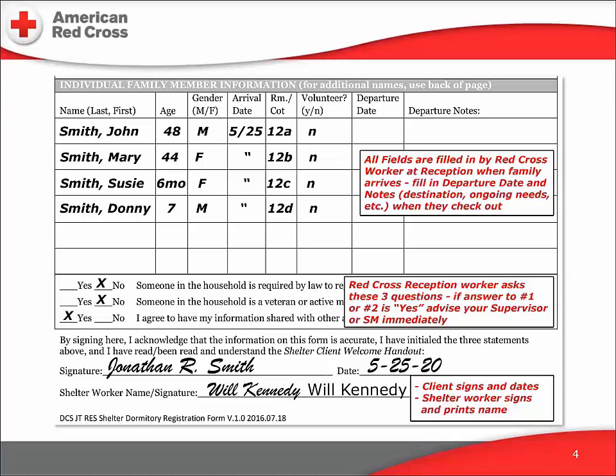Filling out the form yourself gives you the opportunity to observe the client's demeanor to gauge the possibility that he or she needs immediate assistance from one of our Red Cross support departments or outside partners. The top box records information for each member of the client's family who arrives at the same time. Additional members who arrive later should be added to this form at that time. We ask for the name, age, gender, and arrival date for each member of the family. The cot number will be filled in by the dormitory supervisor.